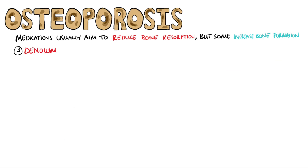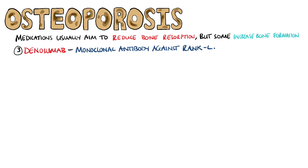Denosumab is our next medication. Parathyroid hormone can stimulate osteoblasts to produce RANK-L, which increases osteoclast activity, but denosumab is a monoclonal antibody against RANK-L. It has been shown to be as effective as the bisphosphonates, and it is mostly used in postmenopausal osteoporosis.